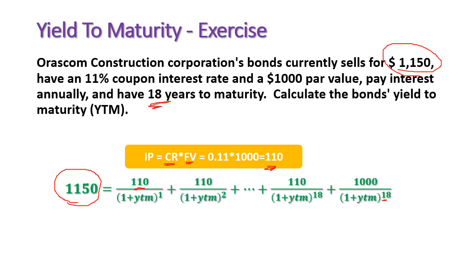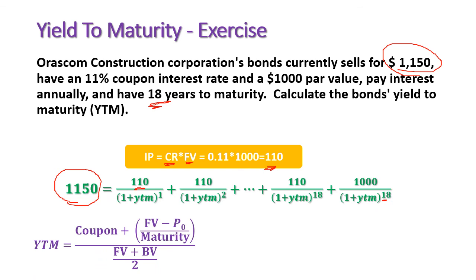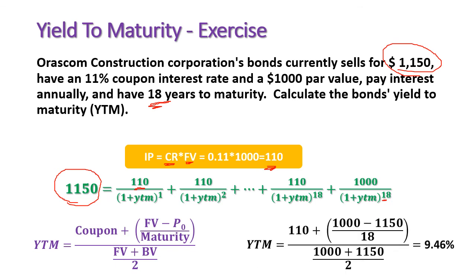Applying the approximate yield to maturity equation: numerator is coupon payments of 110 plus (face value of 1,000 minus market price of 1,150) divided by years to maturity of 18; denominator is the average of face value of 1,000 and market price of 1,150. The result is approximately 9.46%. Therefore, 9.46% is the yield to maturity.